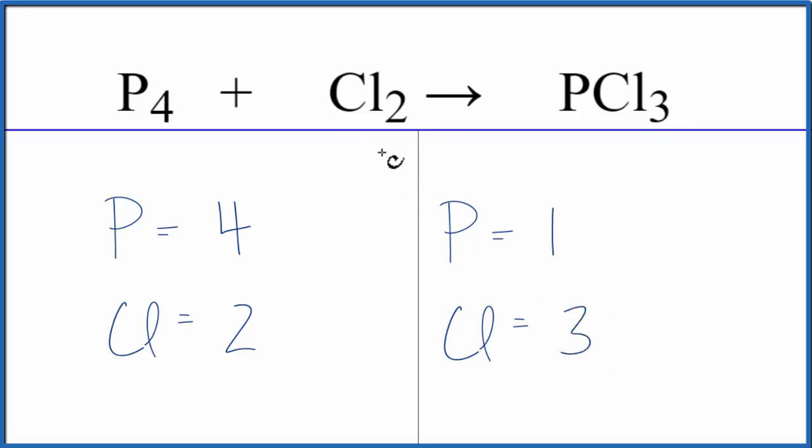Let's leave the chlorines to last. Let's see if we can fix the phosphorus atoms here. Because if I put a coefficient of 4, this 1 times 4, that would give me four phosphorus atoms. And those would be balanced.